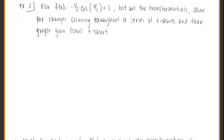For this function, we're going to list all the transformations, show the changes occurring throughout a series of t-charts, and then graph your final t-chart. So instead of on one graph showing the main curve, then graphing the curve after it's moved left or moved up and then flipped, we're going to wait and do everything in our t-charts like we've done in the past, and then we're just going to graph that final last t-chart. So let's list out our transformations.